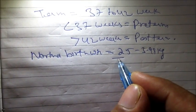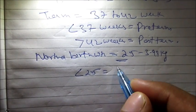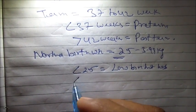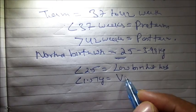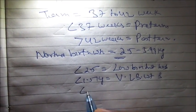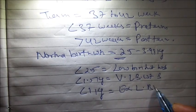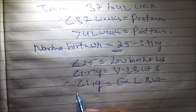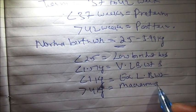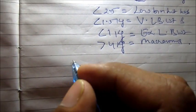The normal birth weight in India is 2.5 to 3.99 kg. If the child has a birth weight less than 2.5 kg, it is said to be a low birth weight baby. If it is less than 1.5 kg, it is a very low birth weight baby, and if the weight is less than 1 kg, it is said to be an extreme low birth weight baby.